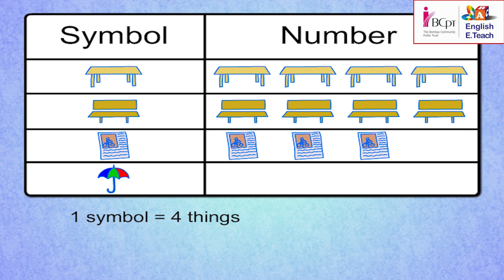Now, for the last one. Umbrellas. Samir, can you do that one? Yes, teacher. That's a simple one. If one symbol stands for four umbrellas, we need two symbols to show eight umbrellas.